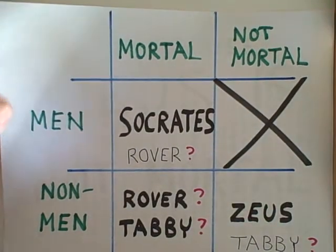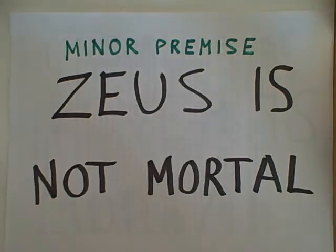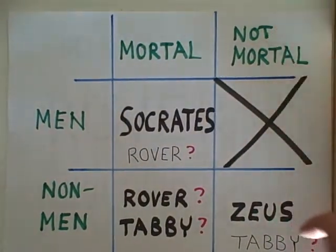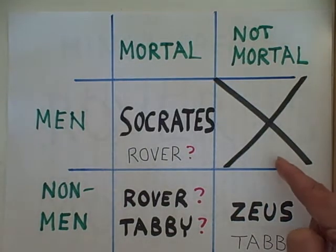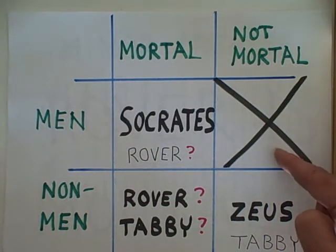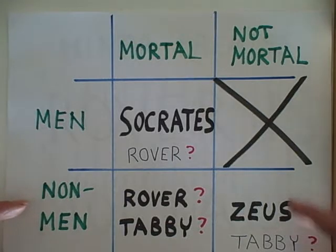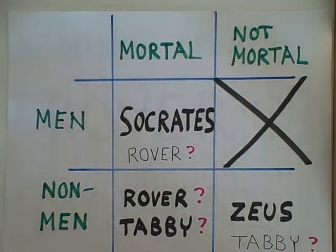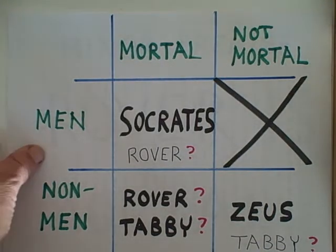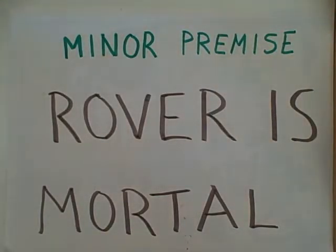Let's try another minor premise that will yield a valid conclusion: Zeus is not mortal. With that we know that Zeus is going to be in the not-mortal column. He can't be in the men's cell because there are no men who are not mortal. Therefore Zeus must be in the non-men row of the not-mortal column. Zeus is in this cell right here.